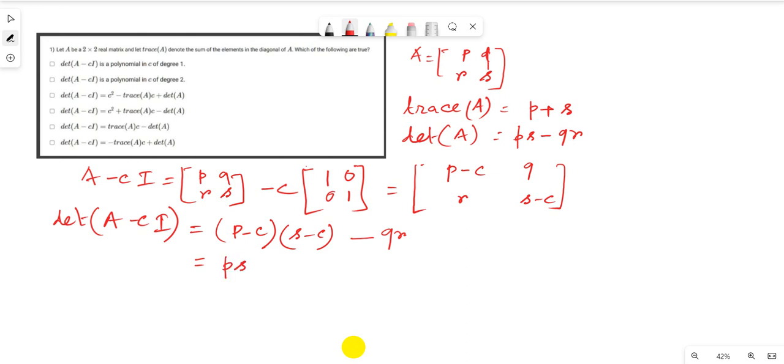ps - pc - cs + c² - qr. So c² minus... taking c in common, it is p plus s, plus ps minus qr. Now this term is...